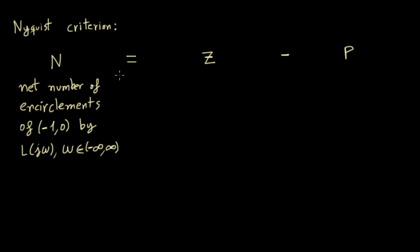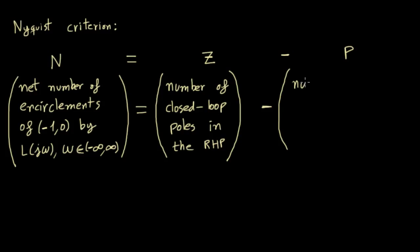So to make a long story short, the criterion can be stated as the net number of encirclements of the critical point by L of j omega with omega between minus infinity and infinity is equal to the number of closed loop poles in the right half plane minus the number of open loop poles in the right half plane.